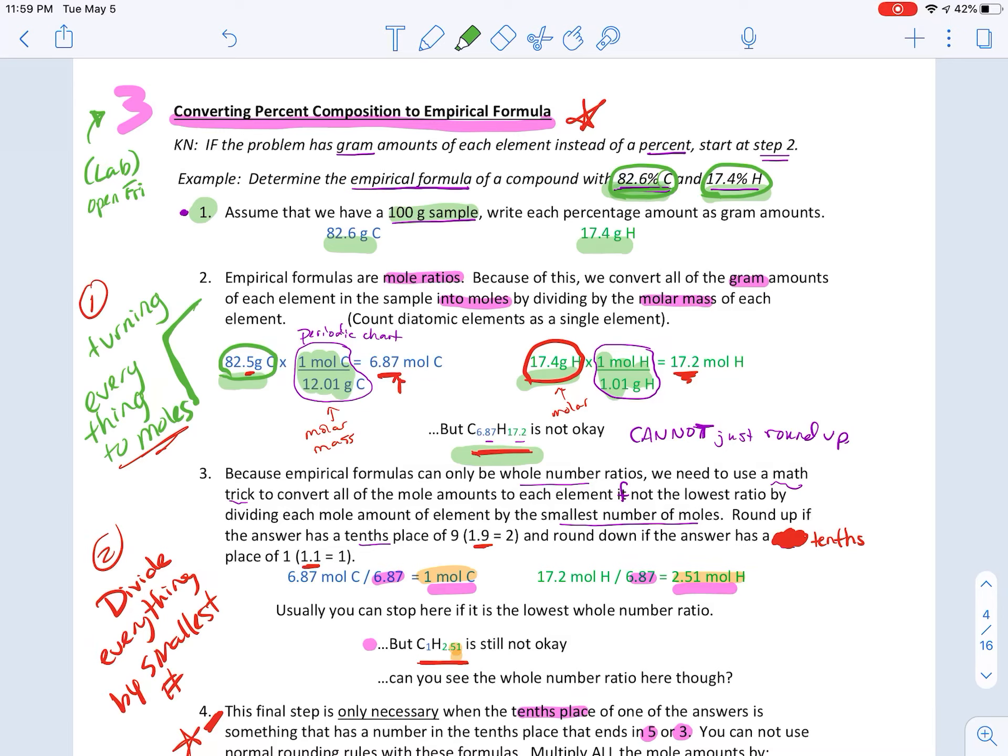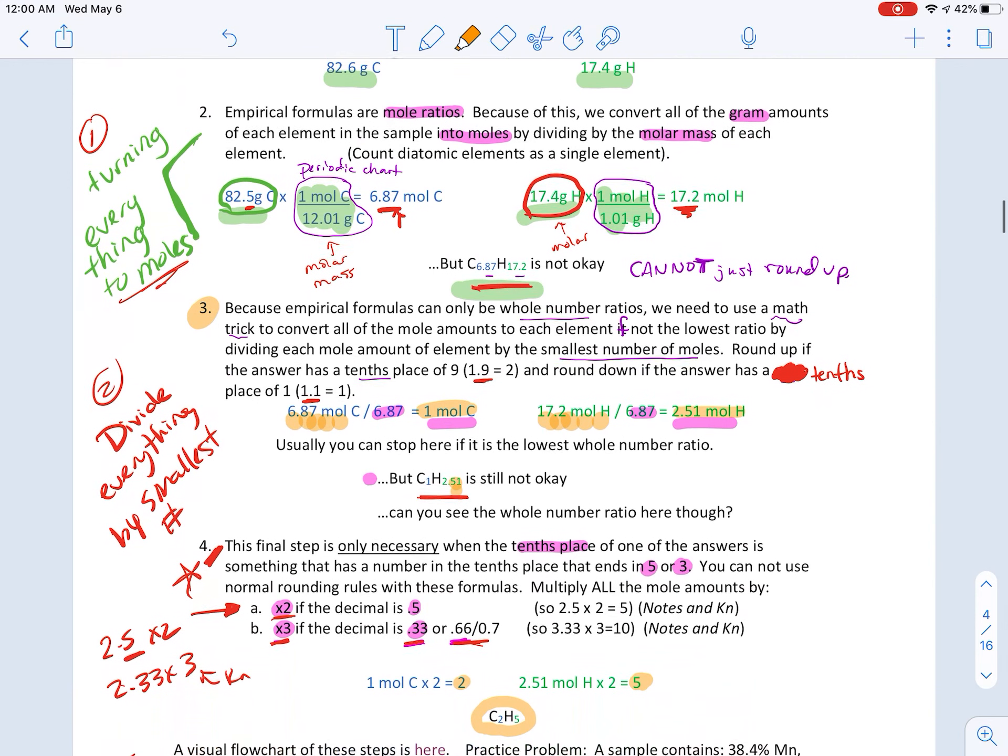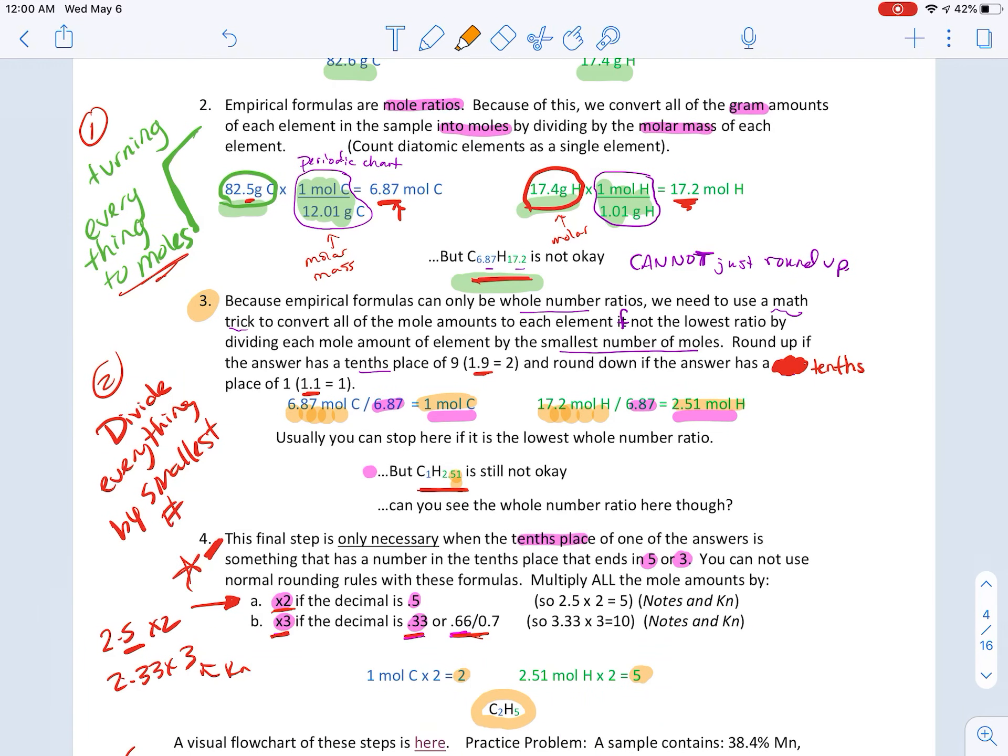You can't have those kinds of little decimals sitting around in there. You can't just round up or round down. If it's like 0.9, you can. If it's 0.1, you can round down. 0.9, you can round up. But that's it. So now what we do is we do a math trick. And that's what step three is all about. So step three right here, this is a little math trick. And you take your two molar masses, and you divide by whichever one is smaller. So the 6.87 is smaller. So you end up with one mole of carbon and 2.51 moles of hydrogen. Now, most of the time, this works, and you get all whole numbers. So you can stop there if that happens. But if not, it's 1 to 2.5. It's still not okay.